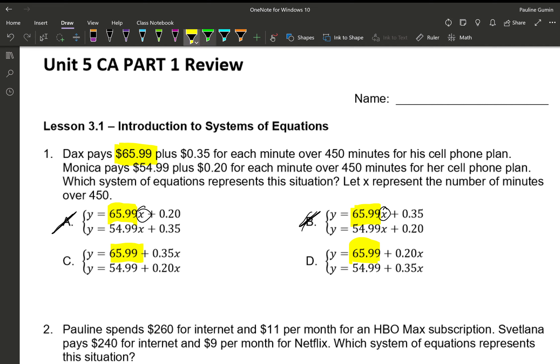The next word for Dax is plus, which unfortunately doesn't really help us pick between C and D because they both have pluses. The next part is $0.35 each minute, and we have X representing each minute. So we should have 0.35X. Let's find it. It exists in letter C.